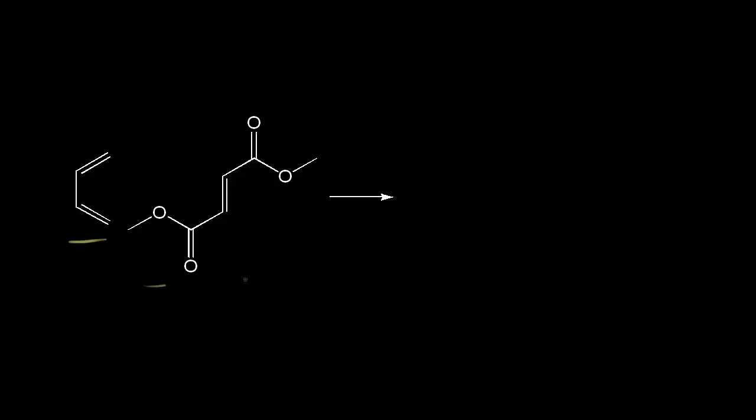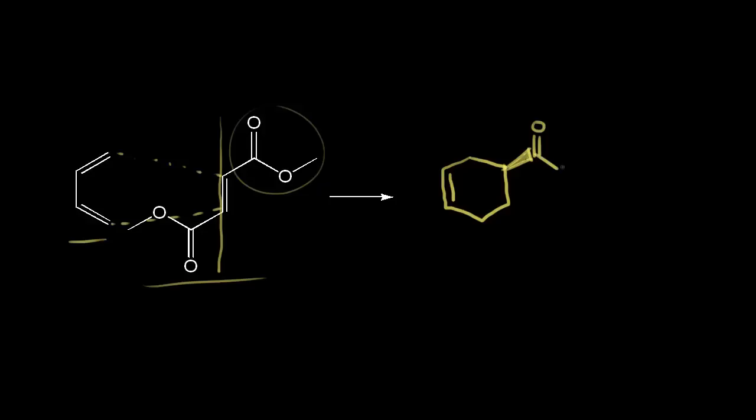Let's say we're given this Diels-Alder reaction on a test. On the left is the diene, on the right is the dienophile. We start by drawing a cyclohexene ring. Then we think about the stereochemistry of the dienophile: drawing a line, the stuff to the right of the line ends up as a wedge — so that ester comes out at us in space. The stuff to the left gets a dash, going away from us. And from the pictures we saw, we also get the enantiomer, so the product is this compound plus its enantiomer.